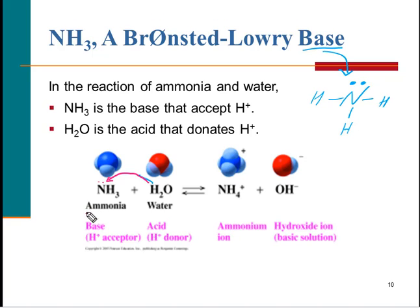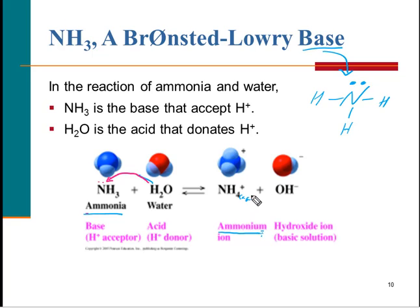NH3 goes to NH4+ — we now have the ammonium ion, not the hydronium ion. Ammonia is NH3; don't confuse that with ammonium, which has one extra letter and one extra hydrogen ion. This is why ammonia is a base — it's accepting a proton from water, hence water is acting as an acid, being a proton donor. Both the ammonium and hydroxide ions are in aqueous solution.